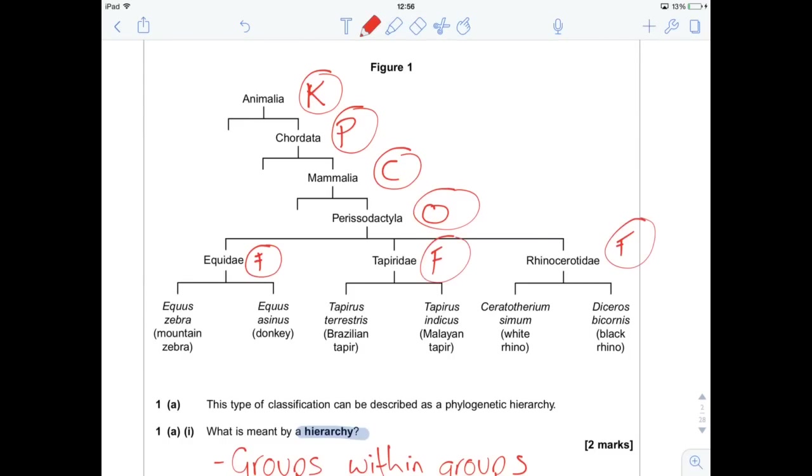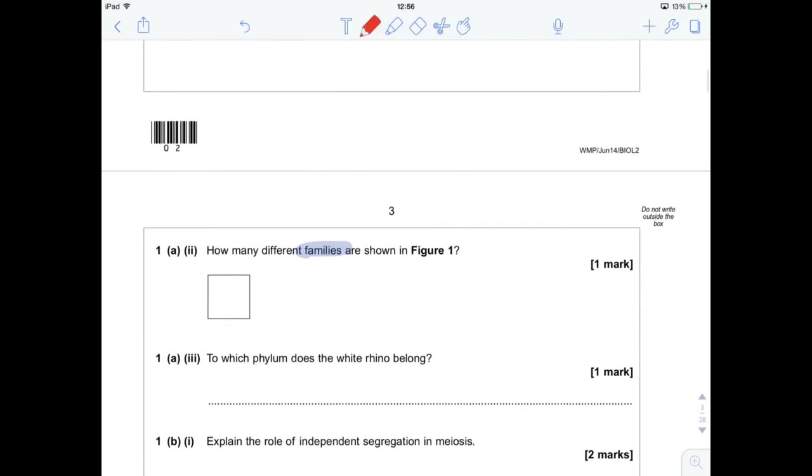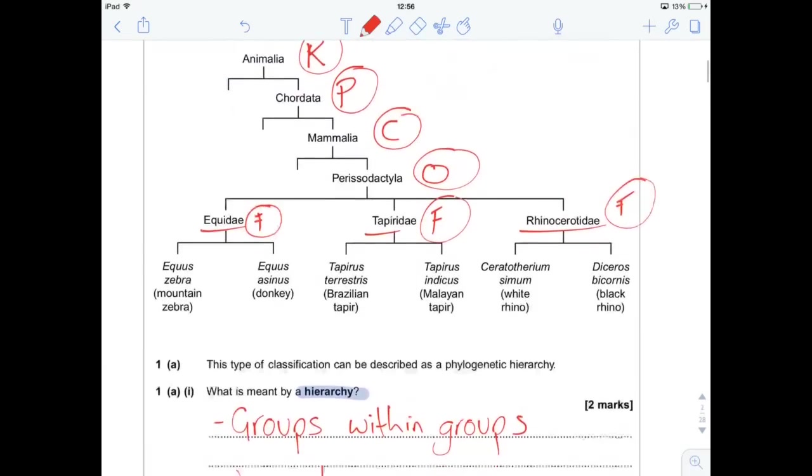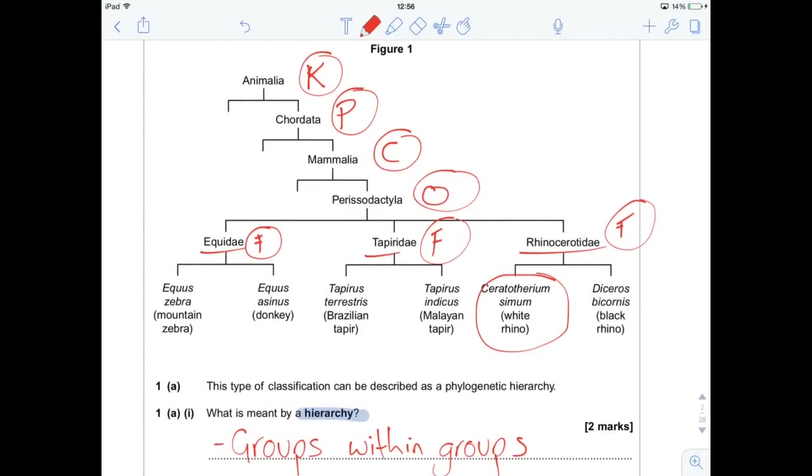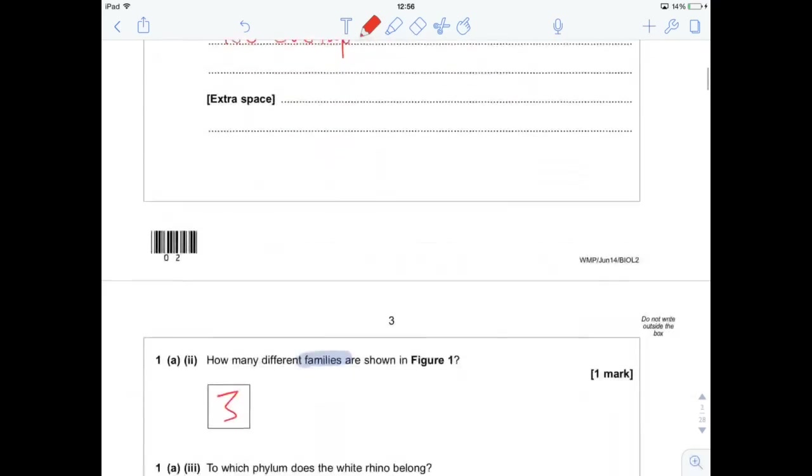And to which phylum does the white rhino belong? Let's have a look. Phylum, white rhino. Here's the white rhino. So we know it's genus, it's species. Its family is rhinoceratidae. Its order is perissodactyla. Its class is mammalia. And its phylum is chordata. Nice.